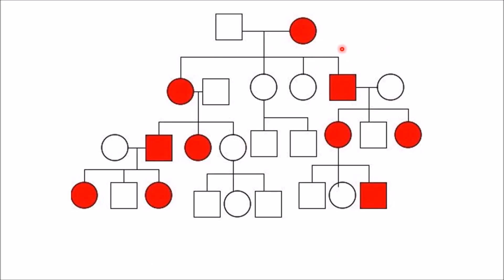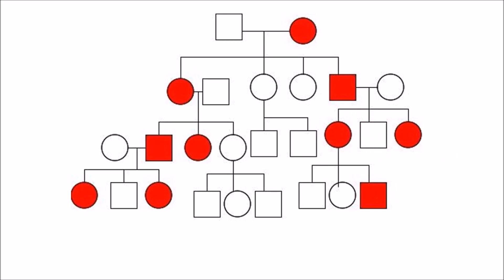In this example, there is no skipping and all generations are affected, so it is a dominant disorder. Males are transmitting to their daughters but not to their sons. Therefore it is an X-linked dominant disorder.